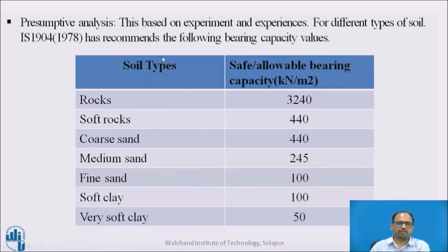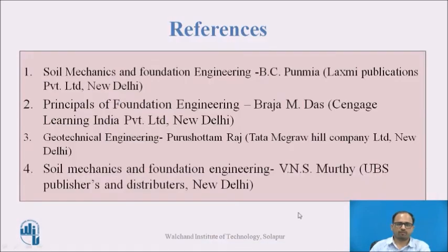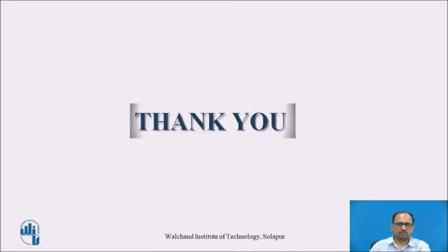Presumptive analysis: based on experiments and experience, IS code 1904 (1978) recommends the following allowable bearing capacity values for different types of soil. For rock, the allowable bearing capacity is 3240 kN/m². For very soft clay, the allowable bearing capacity is only 50 kN/m². Thank you.